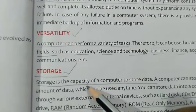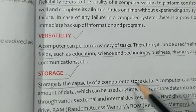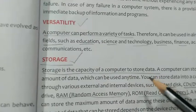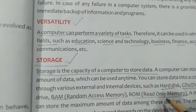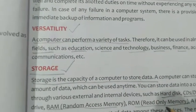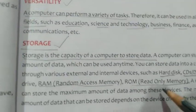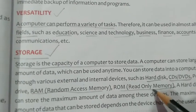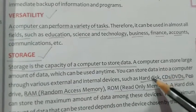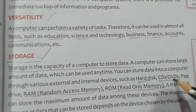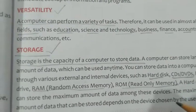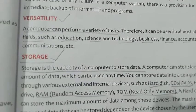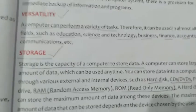Next is storage. Storage means the capacity of a computer to store data. In the computer we have primary memory and secondary memory. Primary memory includes RAM and ROM. Secondary memory includes hard disk, CD, and pen drive, where data can be stored for future reference.